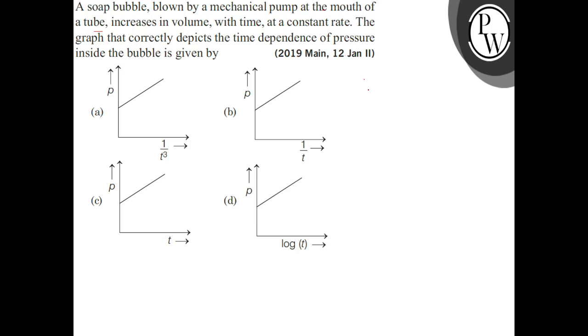Given question is that volume is directly proportional to time. Time is increased, volume is increased by mechanical pump. We can say that V is equal to ct, where c is constant. Volume is 4 by 3 pi r cubed.